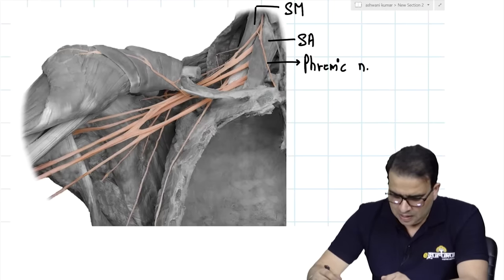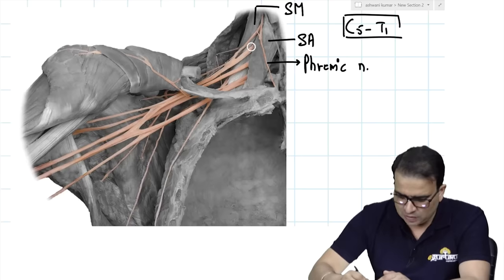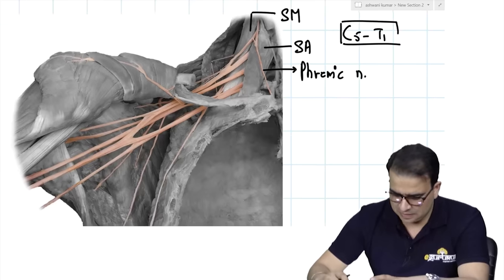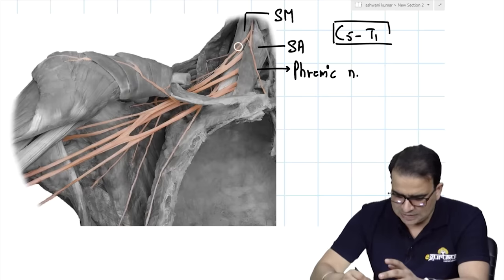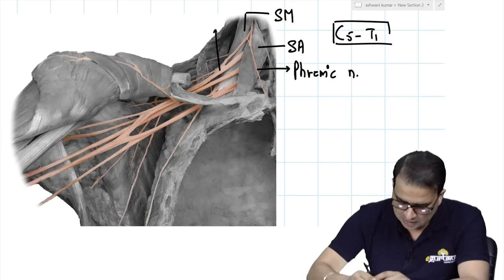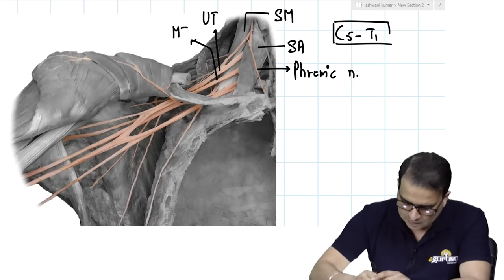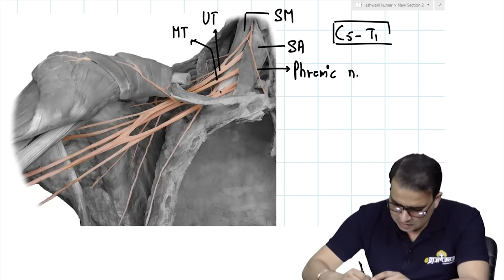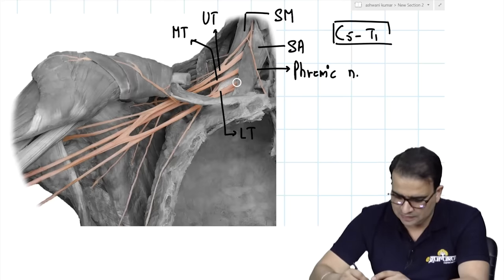The brachial plexus is formed from C5 to T1. You can see C5 and C6 roots, then C7, and C8 and T1. C5 and C6 unite to give the upper trunk of the brachial plexus. The middle trunk is made up of C7 only. The lower trunk of the brachial plexus is made up of C8 and T1.